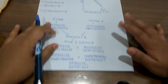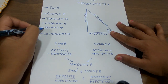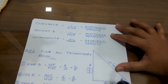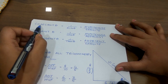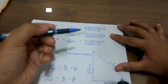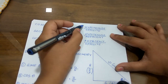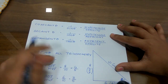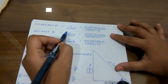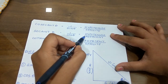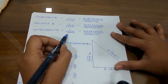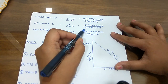The other three ratios — cosecant theta (cosec theta), secant theta (sec theta), and cotangent theta (cot theta) — are simply the reciprocals of the ratios we have already studied. Cosecant theta is the reciprocal of sine theta. Since sine theta is opposite upon hypotenuse, cosec theta becomes hypotenuse upon opposite. Similarly, secant theta is the reciprocal of cos theta. Since cos theta is adjacent upon hypotenuse, sec theta becomes hypotenuse upon adjacent.